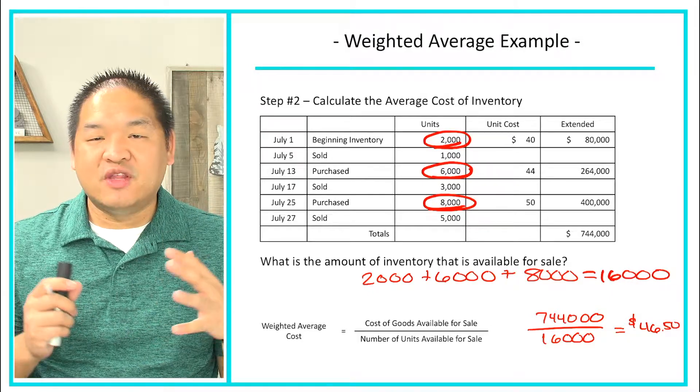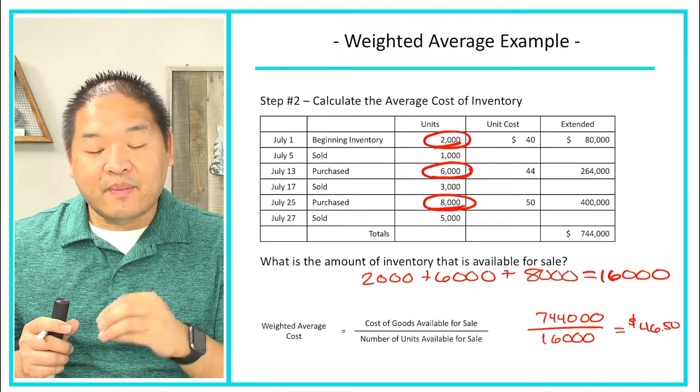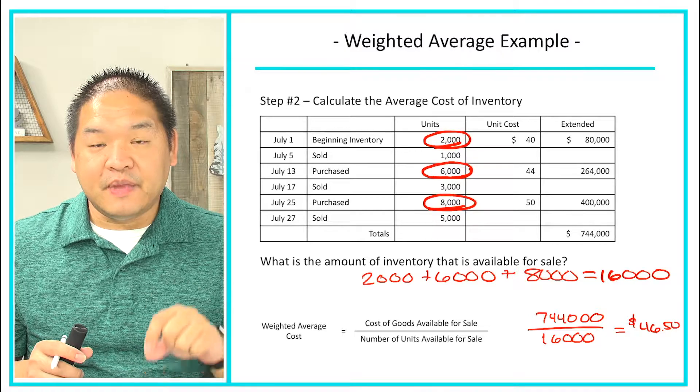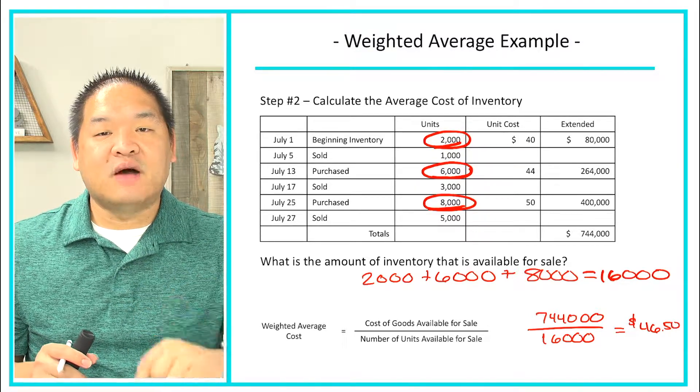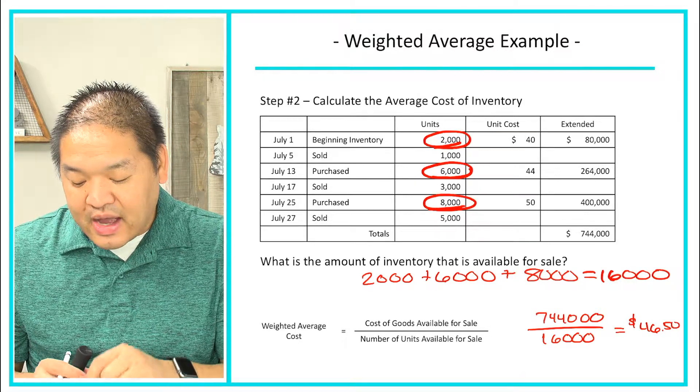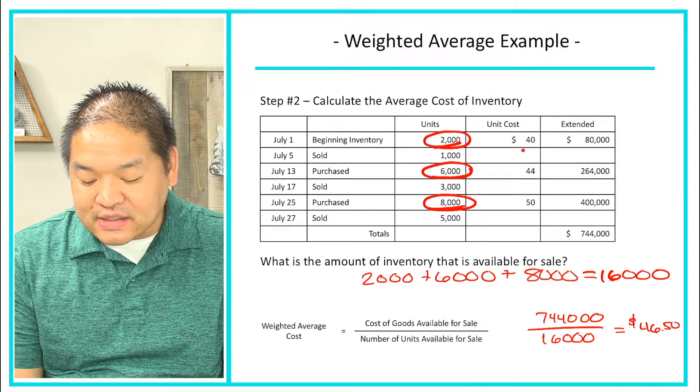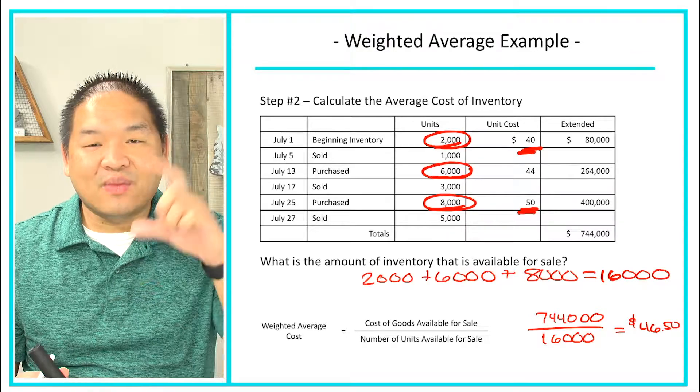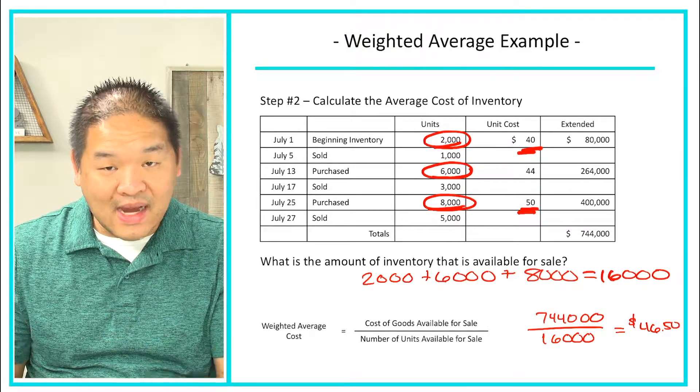Now how do we know if that's kind of in the ballpark? Well what I would do is I would look at that number against all of my unit costs. Now obviously if I have unit costs that are rising, it should be in the middle of the lowest cost and the highest cost. So in this case I got $46.50 and notice my lowest cost is $40, my highest cost is $50, and this $46.50 lands somewhere in the middle.